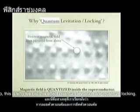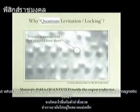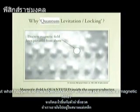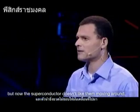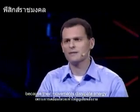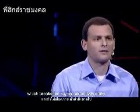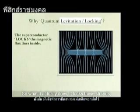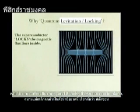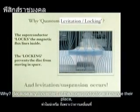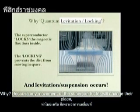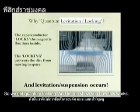This is why we call this effect quantum levitation and quantum locking. When we put a superconductor inside a magnetic field, strands of magnetic field are left inside, but the superconductor doesn't like them moving around because their movement would dissipate energy and break the superconductivity state. So it blocks these strands — called fluxons — and locks them in place, which locks itself in place. Any movement of the superconductor would change their configuration.